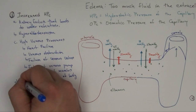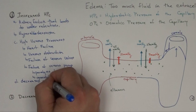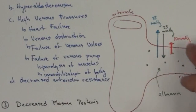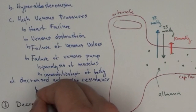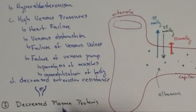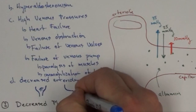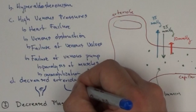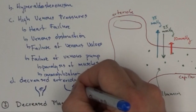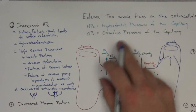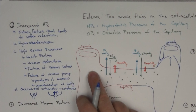Decreased arteriolar resistance also increases HPC, though it seems counterintuitive. Normally the arteriole narrows into the capillary, creating a pressure increase at that junction. But if the arteriole widens considerably due to decreased resistance, you go from a very large diameter vessel into a small capillary — and that really increases pressure at the junction, increasing HPC. So while vasodilators suggest they'd decrease edema by lowering blood pressure, they can actually cause edema by increasing pressure right at the arteriole-capillary junction.